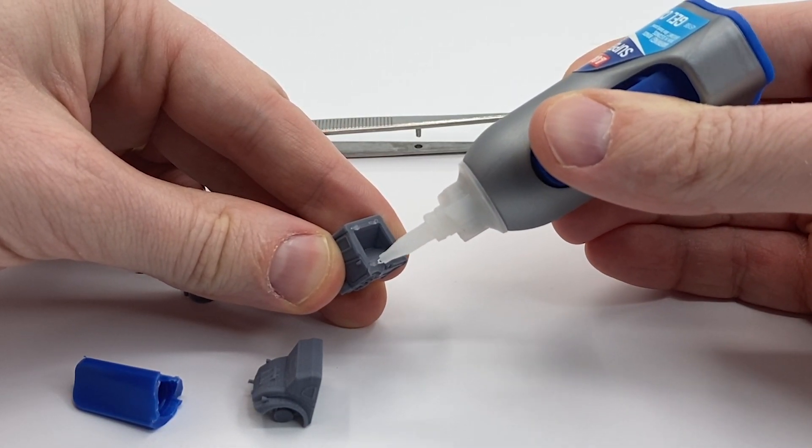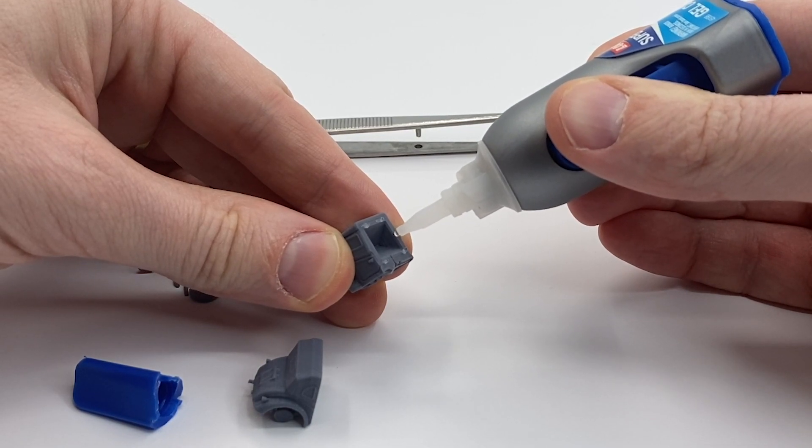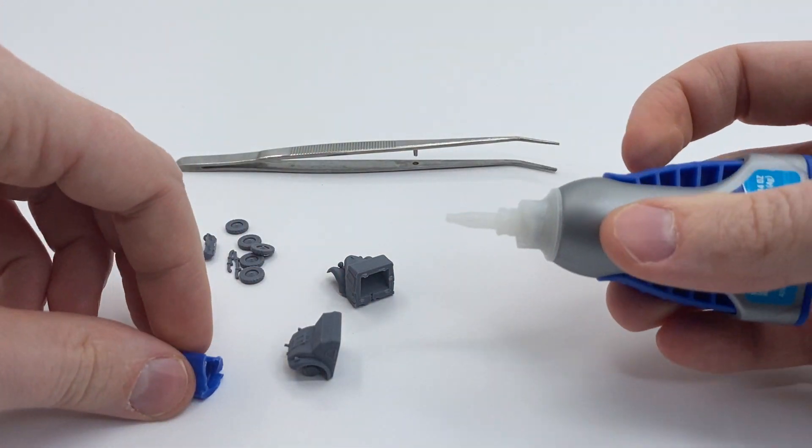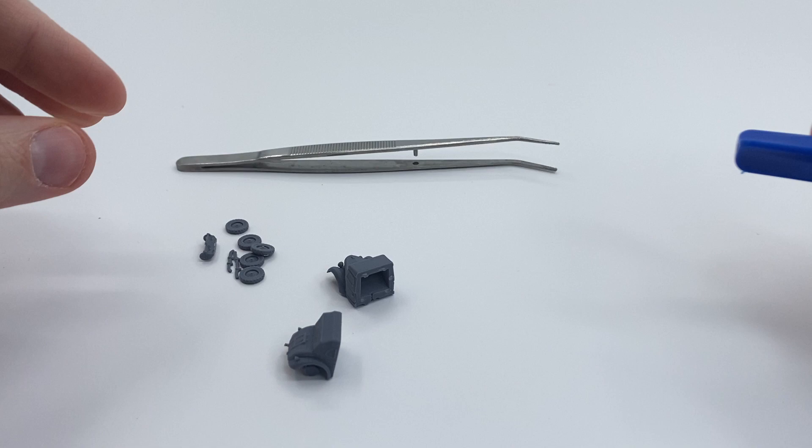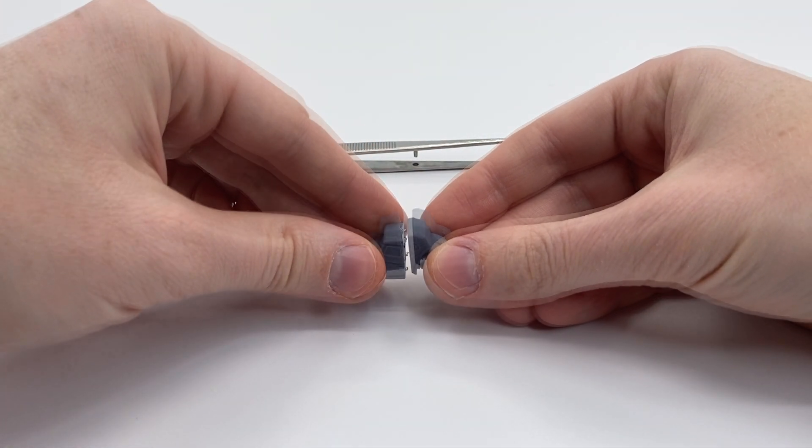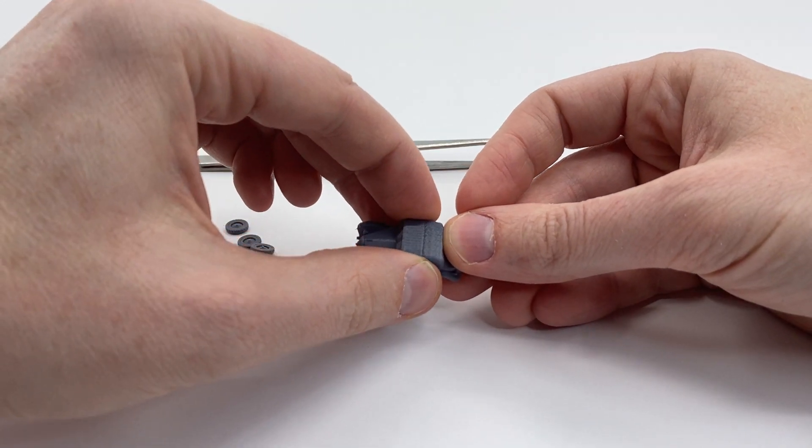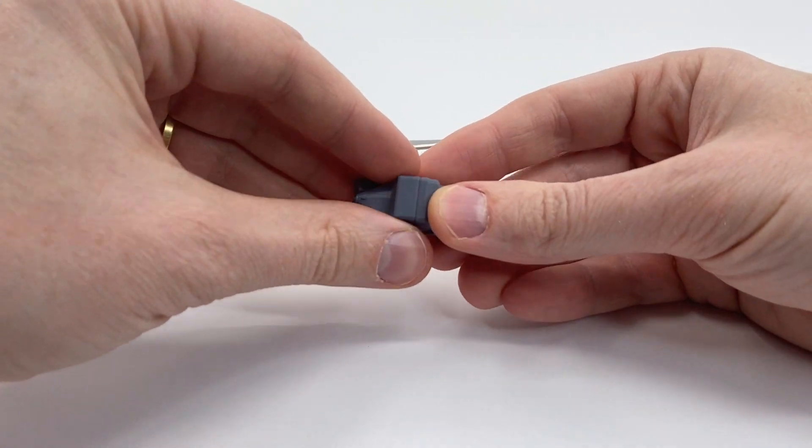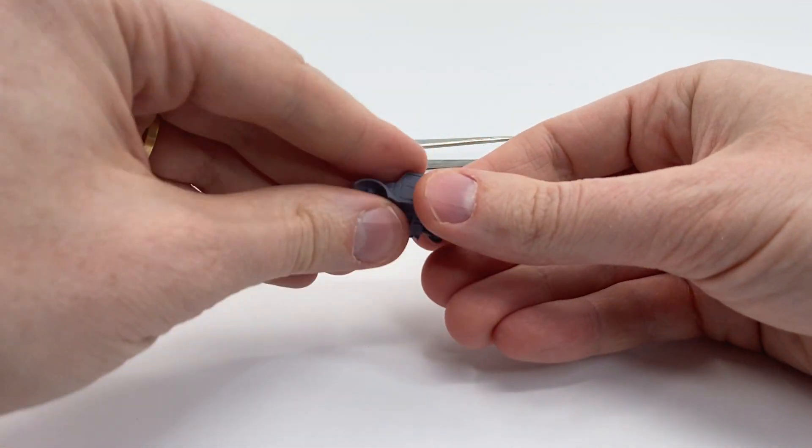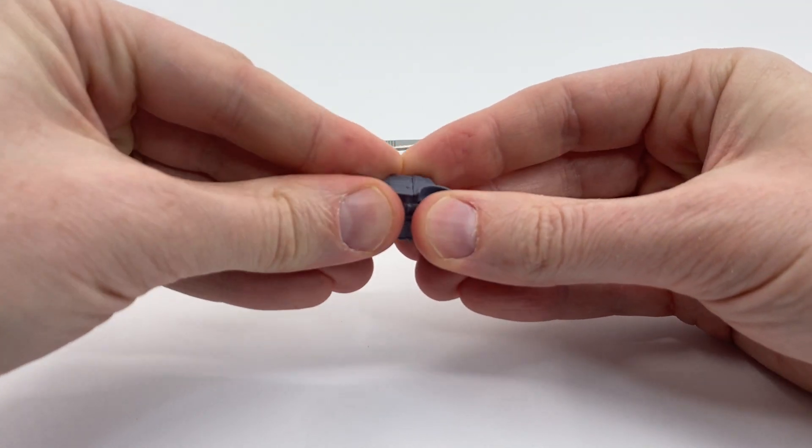It works well for these models. But any modeling type glue should do for this process. So take the car like this, put it together. Be very careful making sure that it goes down well. I think that went down well.